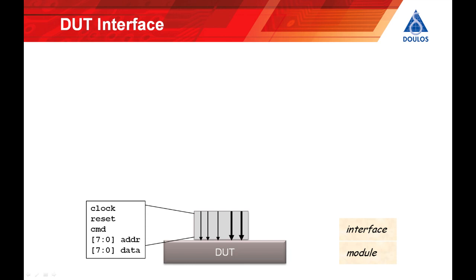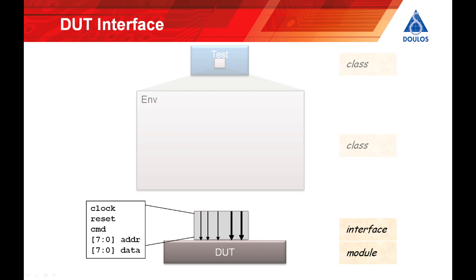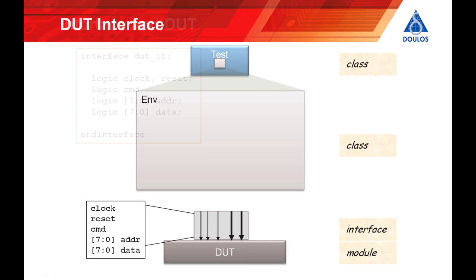We'll start with the DUT interface. In the previous Hello World example, the interface was empty. This time we'll add a few pins: a clock, a reset, command and address, and data buses. We're then going to need to access the content of our SystemVerilog interface from the class-based verification environment, which consists of the test and the verification environment proper. The trick is to get access to the module-based SystemVerilog code — that is, the instance of the SystemVerilog interface — from the class-based verification environment.